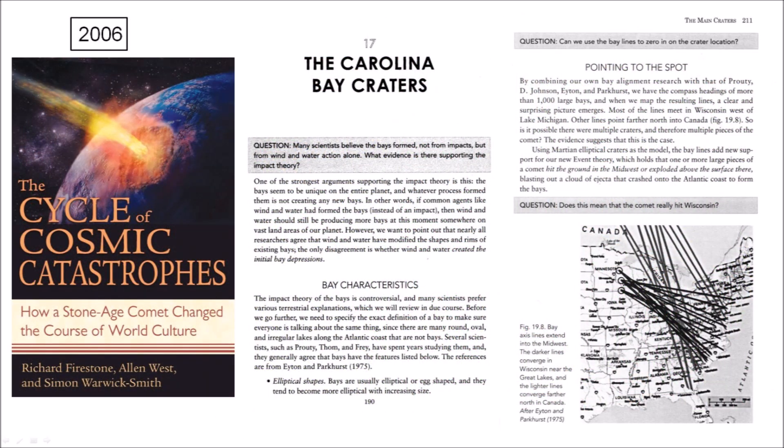In 2006, the book titled The Cycle of Cosmic Catastrophes by Richard Firestone, Allen West and Simon Warwick-Smith proposed that the Carolina Bays were craters made by pieces of glacier ice ejected by the impact of a comet into the ice of Hudson Bay. The book illustrates the convergence of the bay alignments in Wisconsin, which adjusted for the rotation of the Earth, places an impact site by Lake Michigan. The next year, Firestone, West and 24 more co-authors published a peer-reviewed paper that introduced the Younger Dryas impact hypothesis, but it did not include the impact origin of the Carolina Bays.